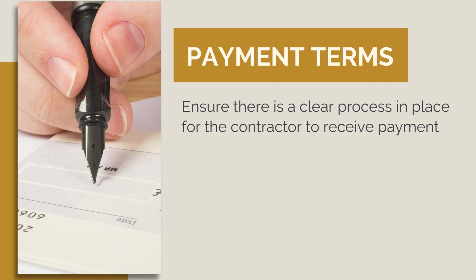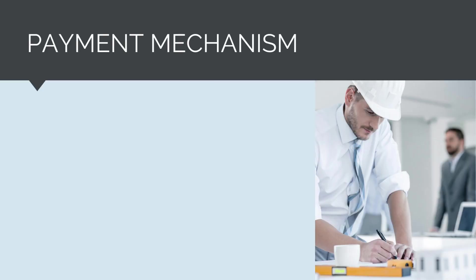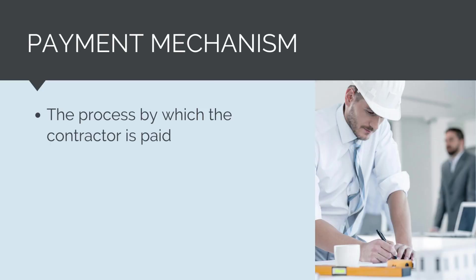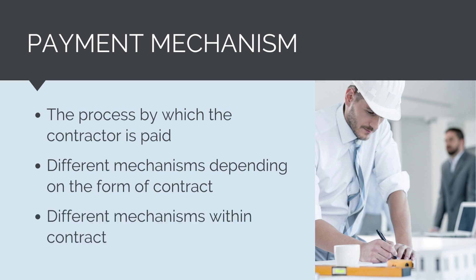The contract will define the payment mechanism, the process for making payment claims, and the specific conditions. The payment mechanism in the contract is the process by which the contractor gets paid. There are multiple different payment mechanisms depending on the form of contract, and to make things more confusing, the same contract can use multiple different payment mechanisms for different scopes.